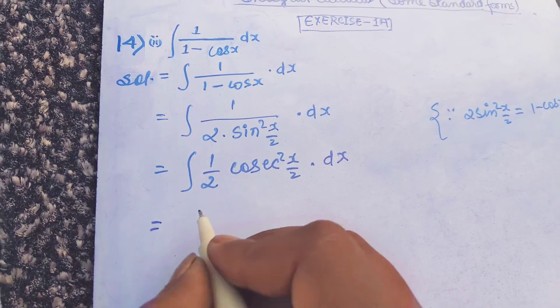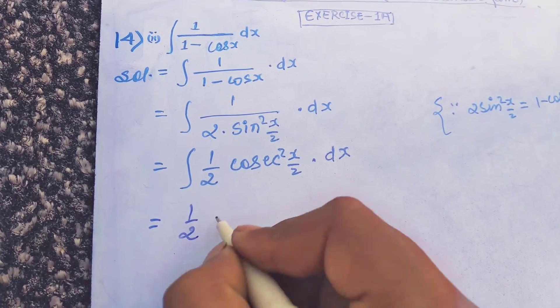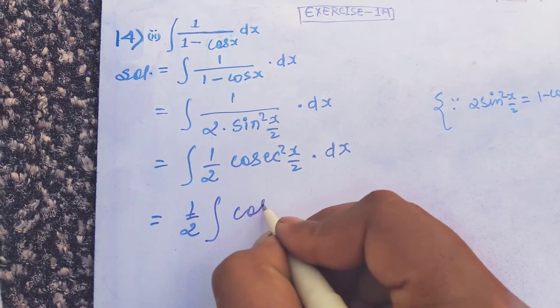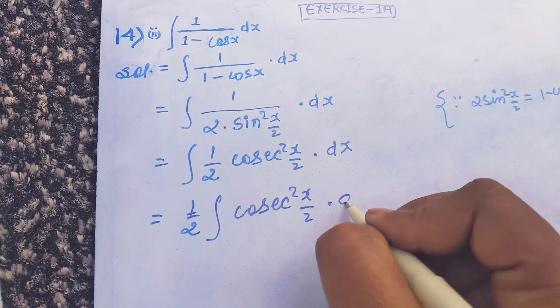So we will put the constant term out of the integration, so it will be 1 upon 2 integration of cosec squared x upon 2 dx.